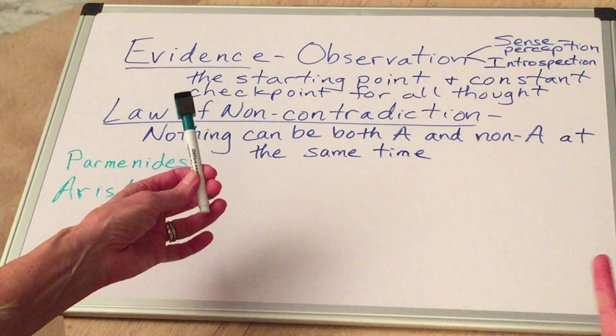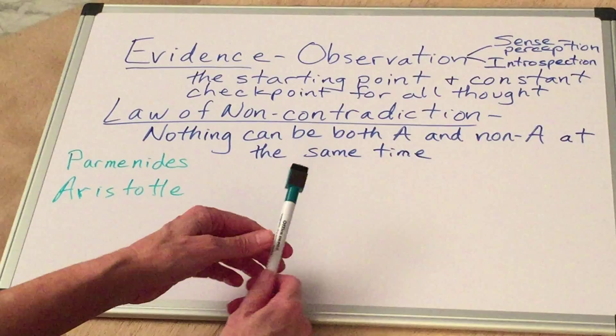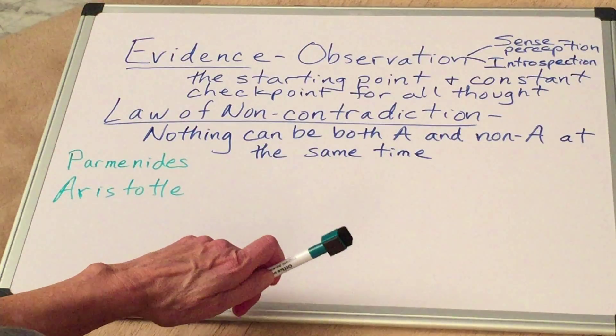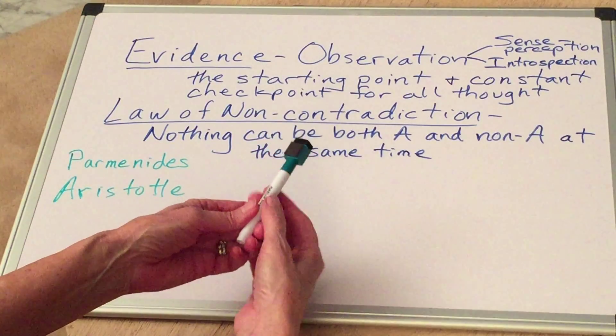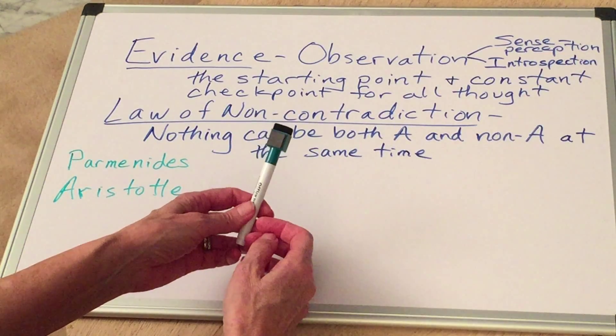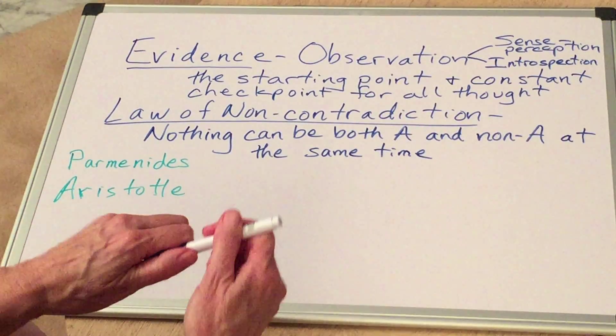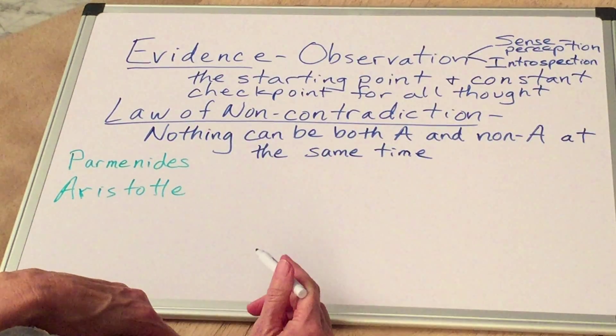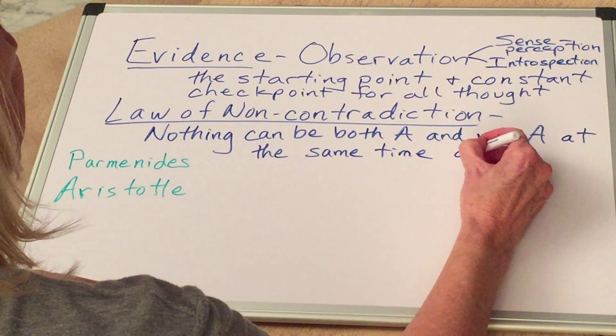And Aristotle said, that's ridiculous. Everything has to be verified against the evidence if we want to know about the real world. And the evidence tells us that reality comes in parts. And so we can just fix the law of non-contradiction and take care of different parts of things. And we can say nothing can be both A and non-A at the same time and in the same respect.